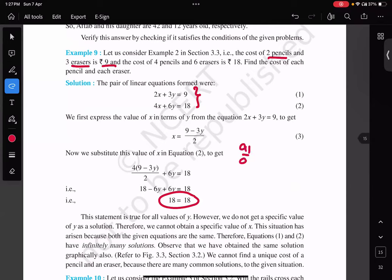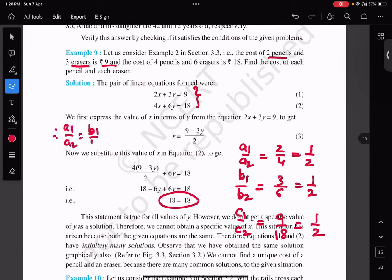So A1 upon A2 is what? 2 upon 4 is half. B1 upon B2 is what? 3 upon 6 which is half. C1 upon C2 is what? 9 upon 18 which is half. So therefore can I say A1 upon A2 equals to B1 upon B2 equals to C1 upon C2?